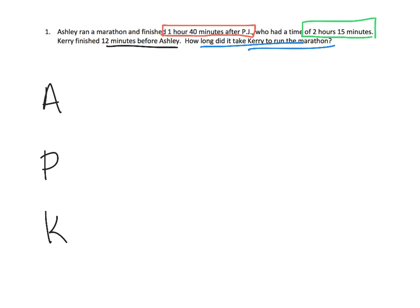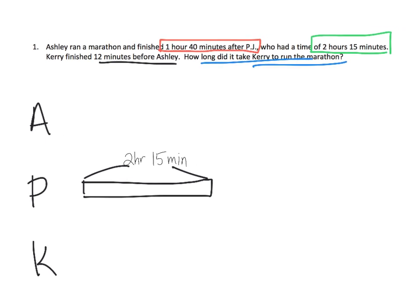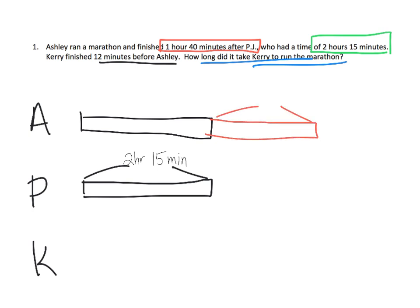It seems easiest to start off with PJ, because PJ's time is 2 hours 15 minutes — pretty straightforward. So 2 hours 15 minutes. And then it says Ashley ran a marathon and her marathon was slower by an hour and 40 minutes. So if this is the tape diagram for PJ, that means Ashley's tape diagram is going to be longer — it starts exactly the same length as PJ.